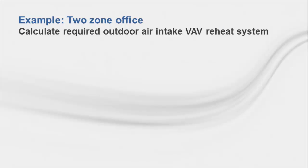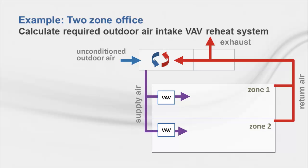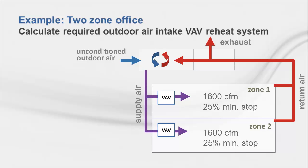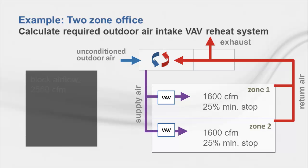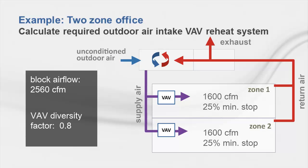To describe the multi-zone calculation process, I'm going to walk you through a simple example and show you how TRACE solves for the outdoor air intake. For this example, let's solve for outdoor air intake for a two-zone VAV system in an office building. The design peak air flow for each zone is 1,600 CFM with a 25% minimum stop, and the system block air flow is 2,560 CFM, which equates to a system diversity factor of 0.8.